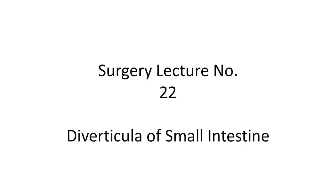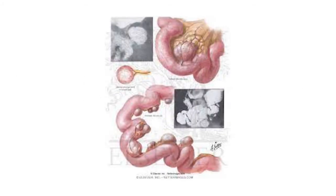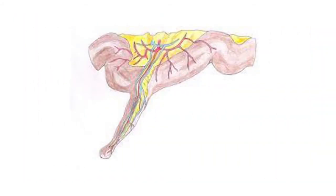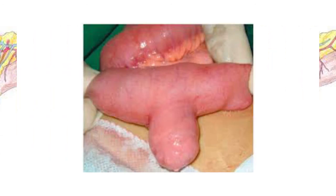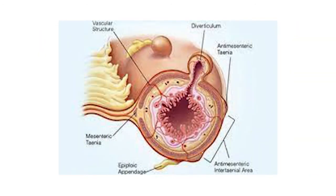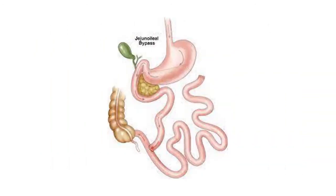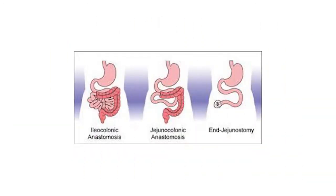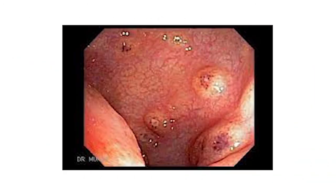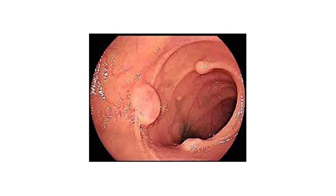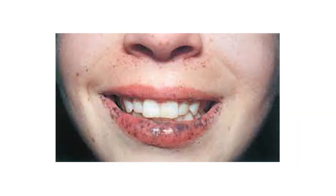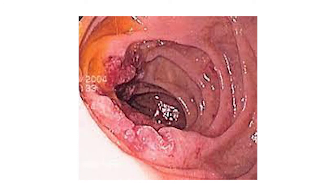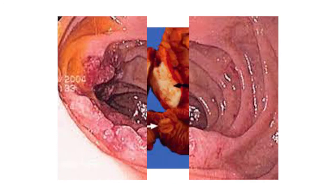Welcome dear friends to my surgery lecture series, number 22 — the diverticula of small intestine. In this lecture we will learn: Meckel's diverticulum and its complications, duodenal diverticulum, blind loop syndrome, short bowel syndrome, typhoid enteritis, neoplasm — benign tumours of the small intestine, Peutz-Jeghers syndrome, malignant neoplasm, malignant tumours of the small intestine, and carcinoids.